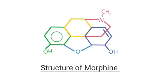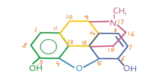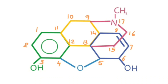This is the general structure of Morphine. The structure of Morphine could be divided into 5 rings: Ring A, Ring B, Ring C, Ring D, and Ring E. The numbering starts from the aromatic Ring A and ends on the nitrogen of the piperidine ring.